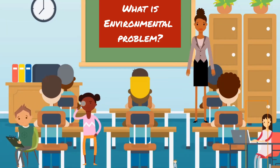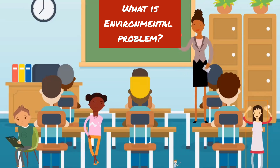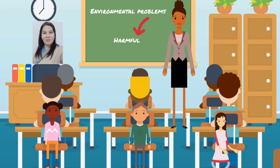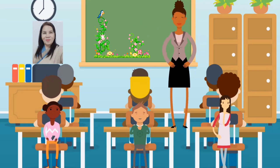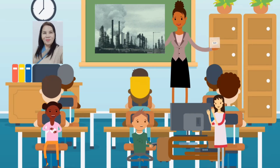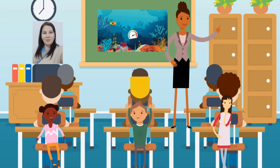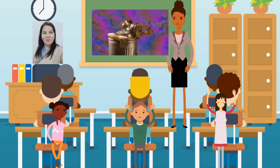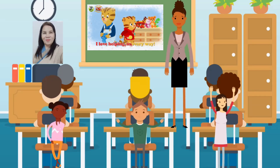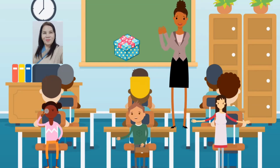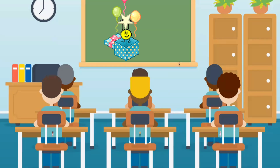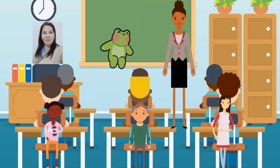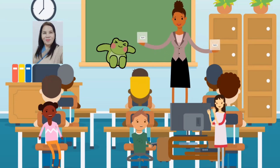Can anyone tell me what an environmental problem is? Great answers! An environmental problem is something harmful that happens in nature, like air pollution, water pollution, cutting down too many trees, or too much garbage. And we can all help solve these problems. By the end of today's lesson, we'll learn how to observe and investigate environmental problems in our community and suggest ways to solve them.